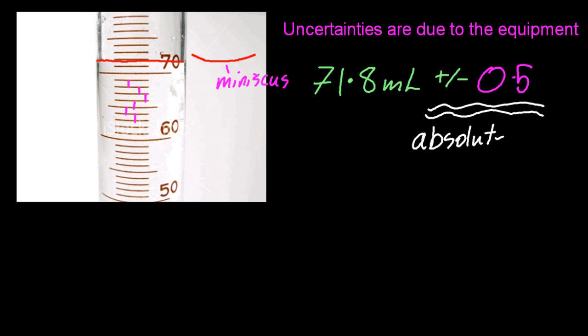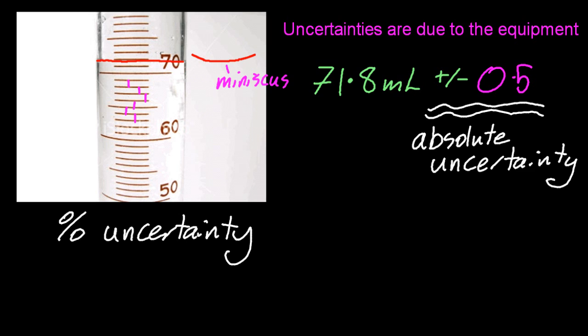That's known as the absolute uncertainty. And that wasn't so tricky. Looking at the percentage uncertainty, well, I'm not even going to give you the equation. It's just pretty obvious, isn't it? And that comes out at 0.7%.